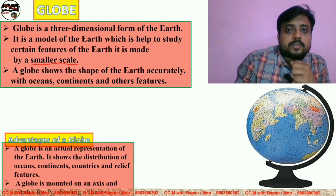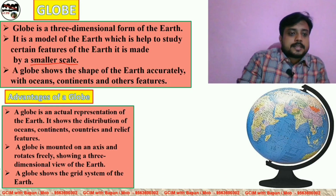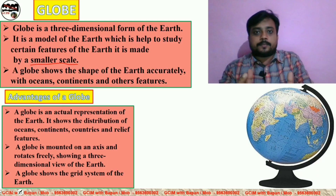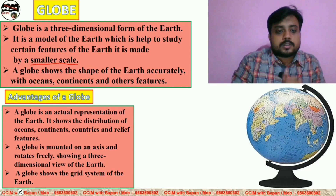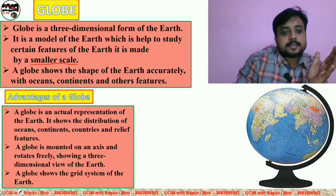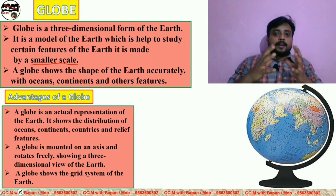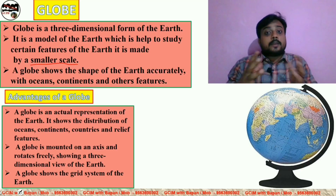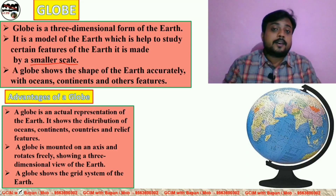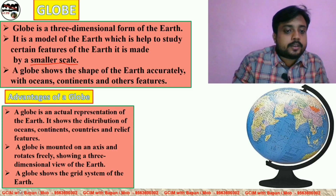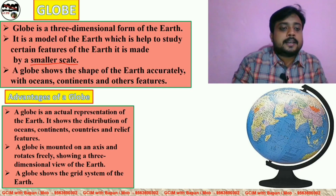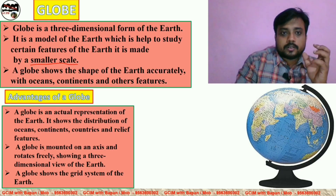Now I will show you the different advantages of the globe. The first point is that the globe is an actual representation of the earth — this means we have the actual model or actual shape. Number two: it shows the distribution of the oceans, continents, countries, and relief features. From the globe we can easily understand the shape of the continents, oceans, countries, and different types of relief features. We will also get the grid system from the globe. A globe is mounted on an axis and rotates freely, showing a three-dimensional view of the earth.